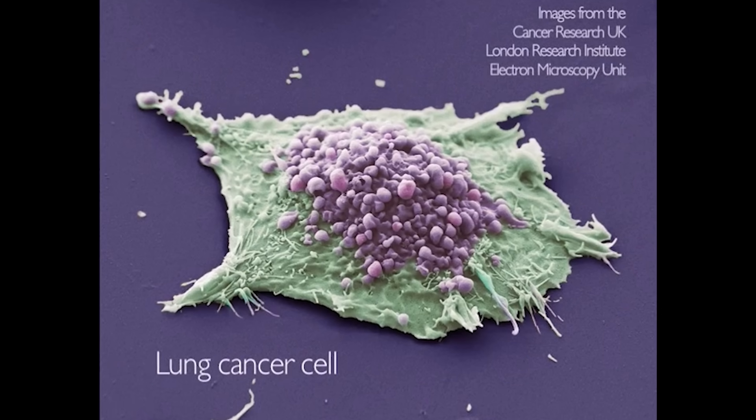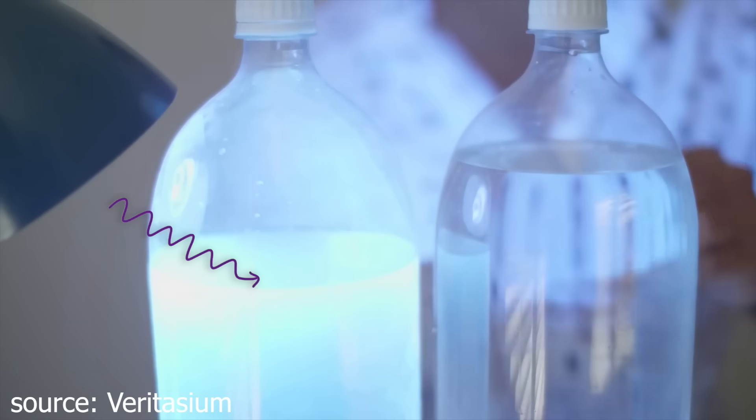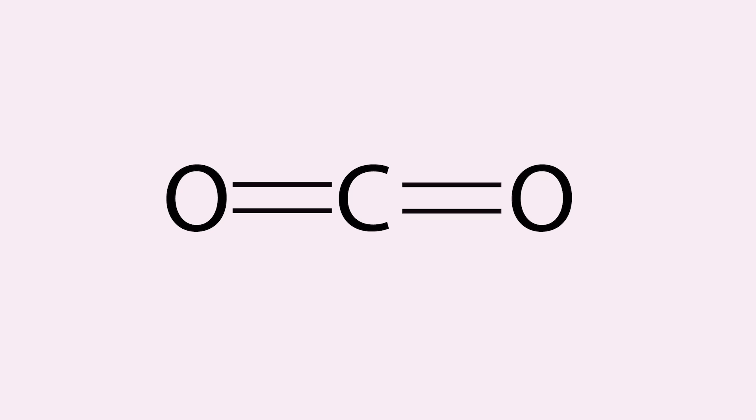To understand how UV light can cause cancer, we first have to look at how it affects matter, specifically electrons. Electrons are negatively charged subatomic particles that form vibrating cloud-like orbits around atoms. When atoms form bonds with each other, it's the electrons that make up the actual bonds.